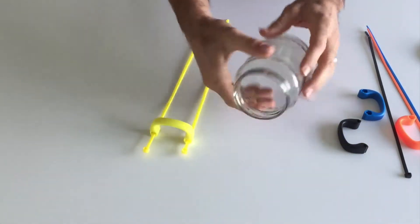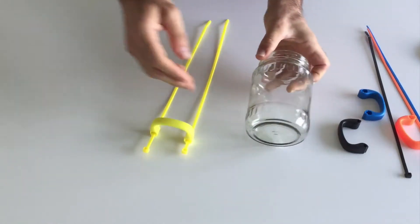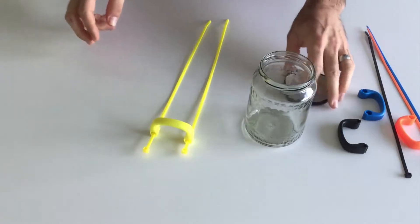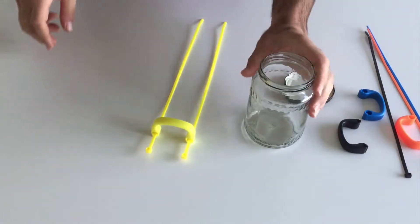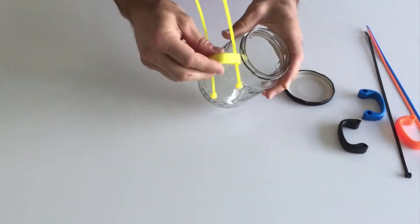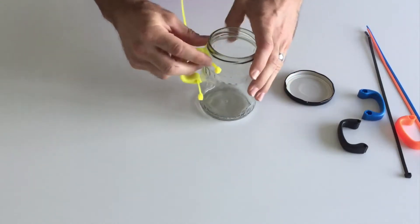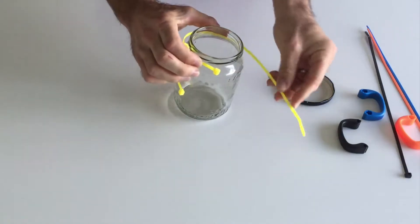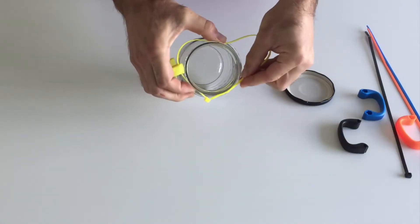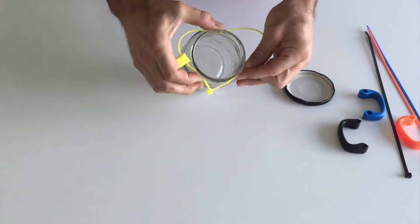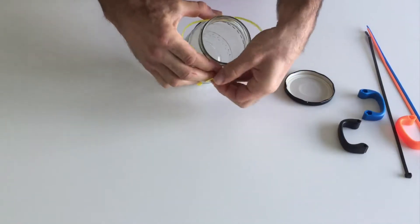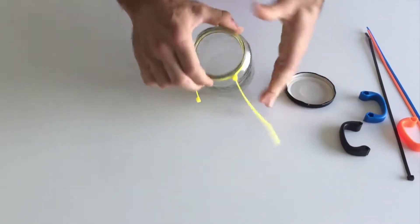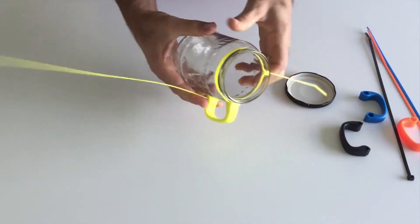Now given that this is a universal jar handle, we can install it on any jar. This was an old pickle jar that I had, and rather than throw it in the bin, we'll install our little handle here. So, essentially, just go like so, like that.